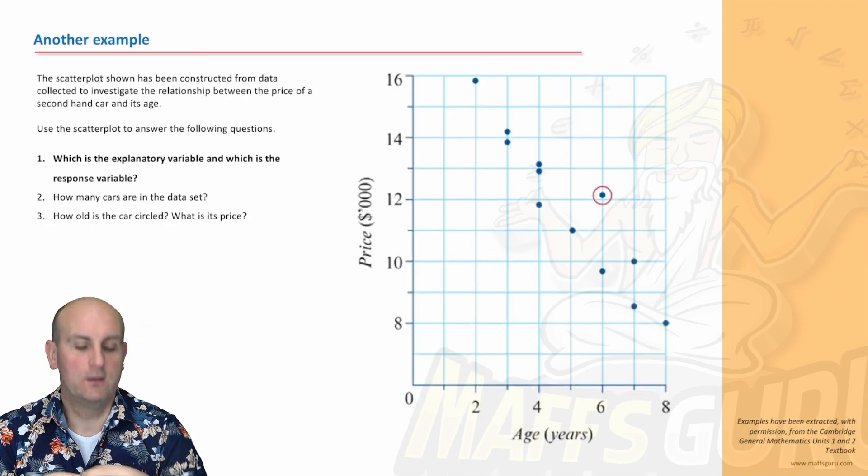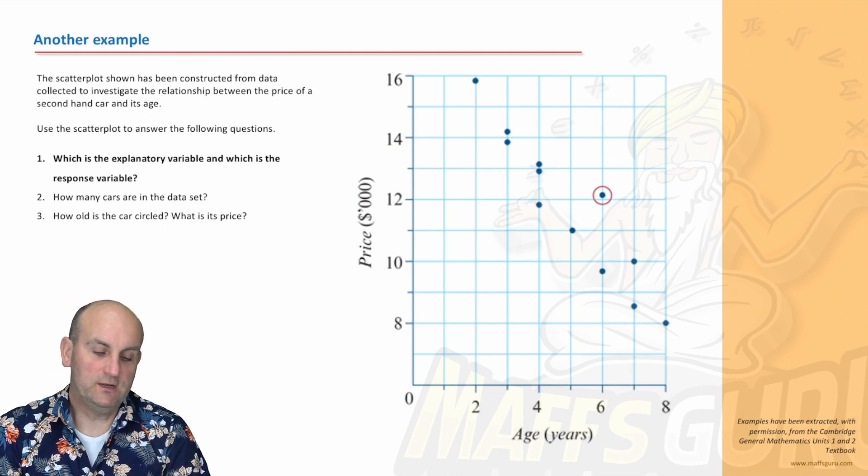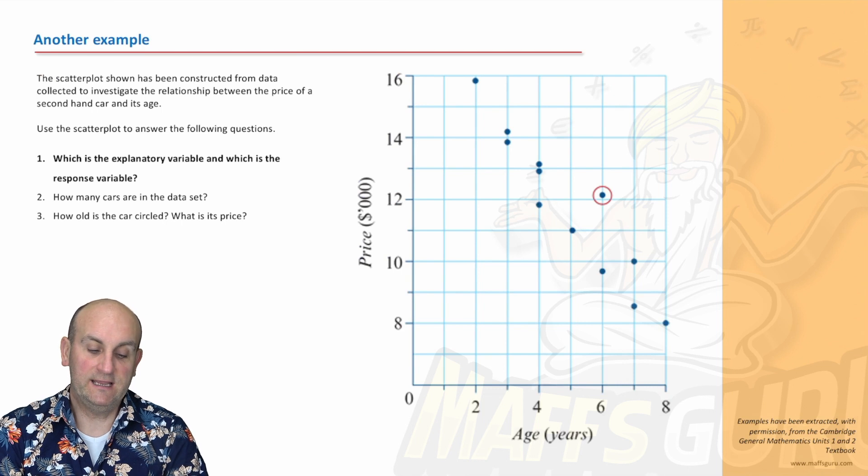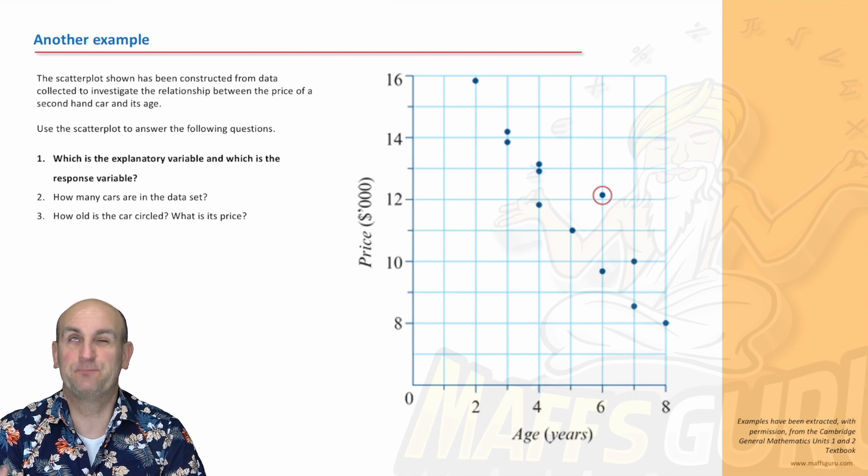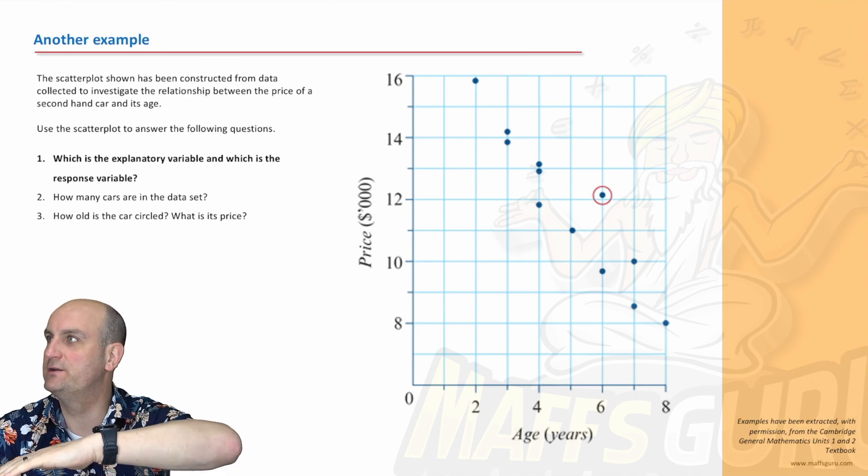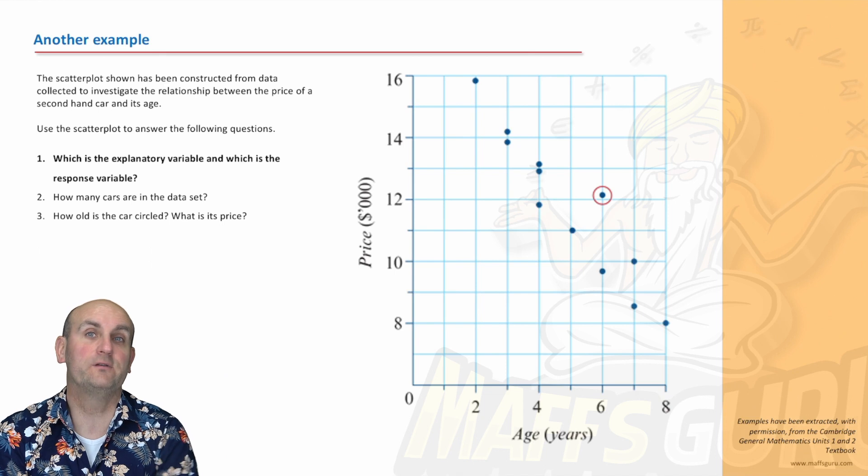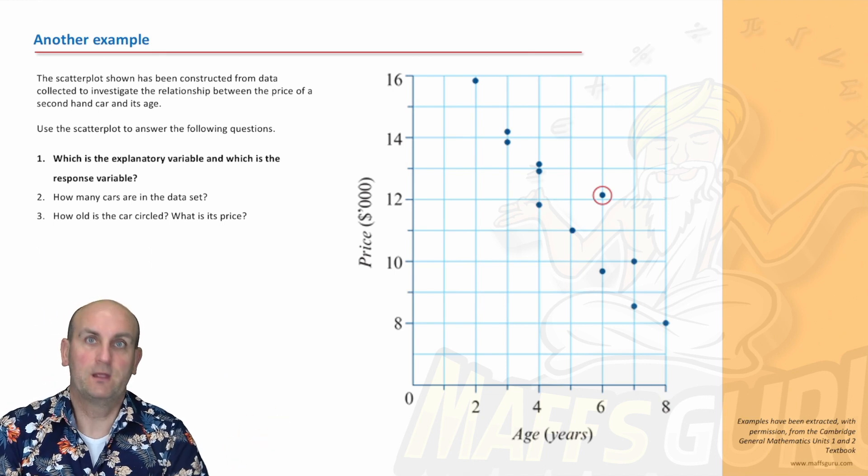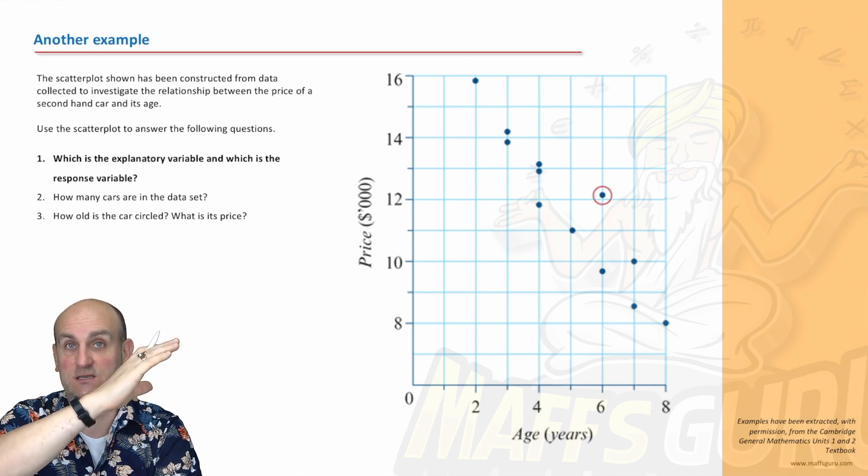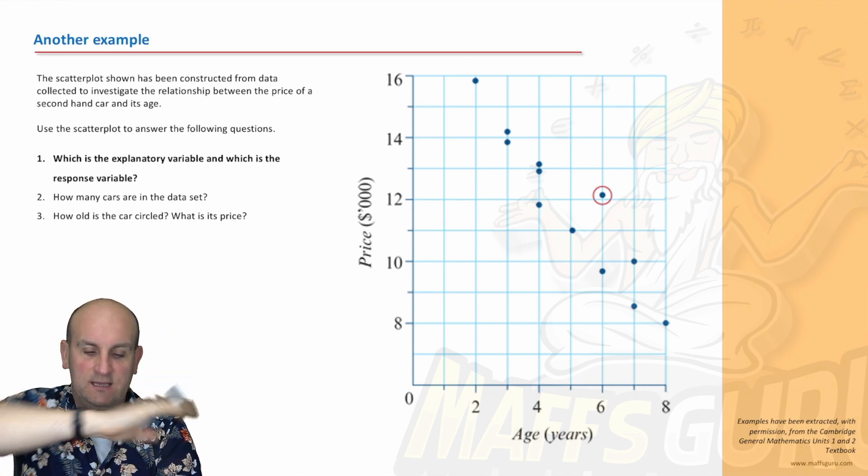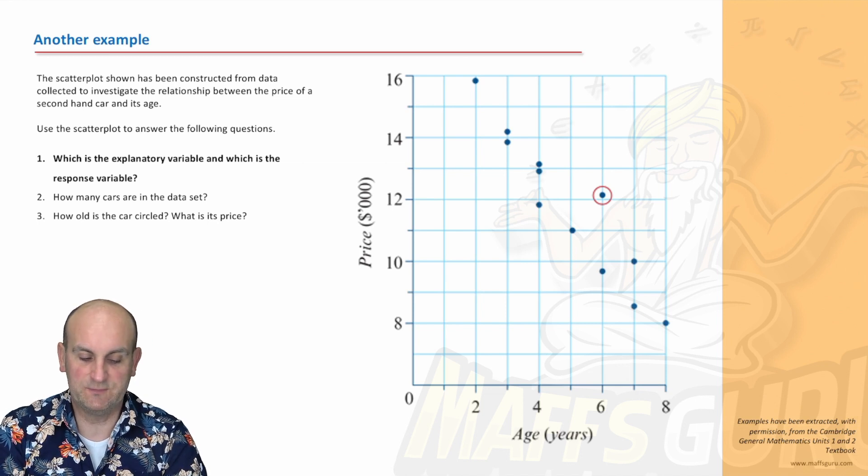Here's another example. I've taken this again from the Cambridge textbook. The scatterplot shown has been constructed from data collected to investigate the relationship between the price of a secondhand car and its age. And again, have we got these right around? Age increases, the price changes. Now, obviously, if you know anything about cars, the minute you drive it off the forecourt, it loses money. The longer you have it, it loses money. So we wouldn't be expecting our graph to be this. We'd be expecting it to be this because we're losing money.